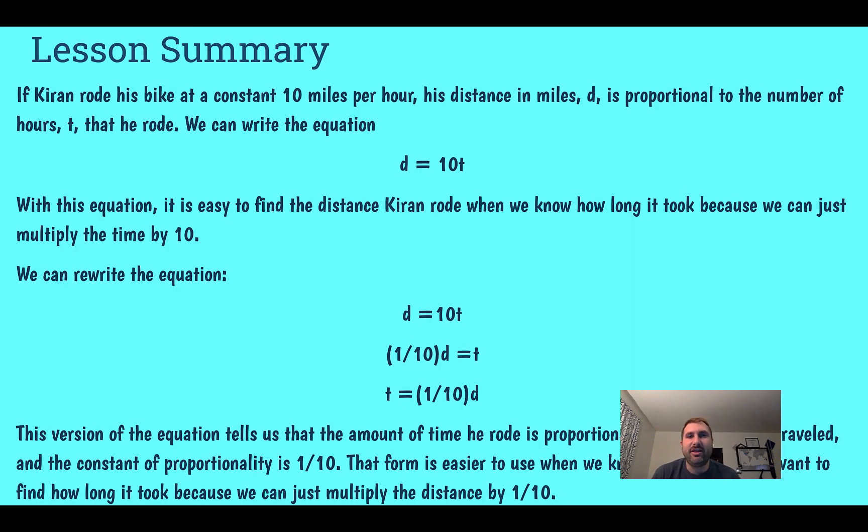In this lesson, we learned that if we know two things are proportional to each other, for example, distance and time, we could write an equation that relates the amount of time to figure out the distance. Here, if Kieran rode for 10 miles per hour, we could just take his time, multiply that by 10, and we could figure out his distance. Similarly, if we wanted to figure out how much time it took him, still going 10 miles per hour, we could just take his distance and multiply that by one tenth, and that would tell us our time.